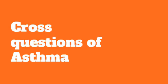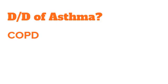Welcome to the third and final video of our series on asthma and COPD. In our previous video we discussed the basic differences between asthma and COPD and the cross questions on COPD. Now we will be talking about the cross questions you will be asked in exams about asthma. After presenting the history, teachers will ask about the differentials. The main differential of asthma is COPD, because the signs and symptoms of asthma and COPD are almost similar.